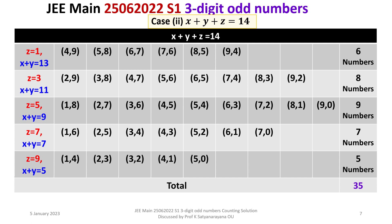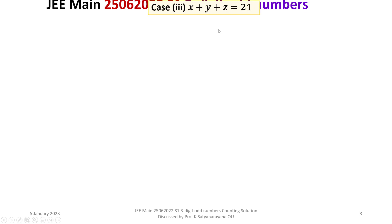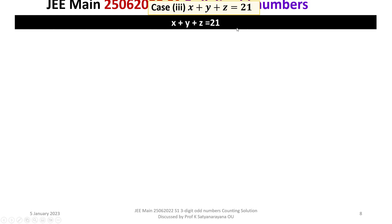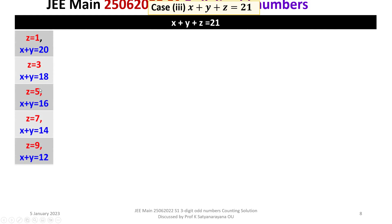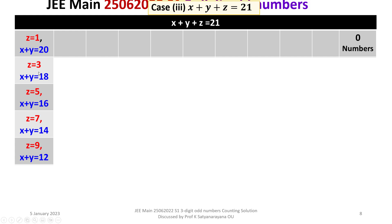Case 3: x plus y plus z equals 21. For z equal to 1, x plus y equals 20 — no valid ordered pairs exist. For z equal to 3, x plus y equals 18; starting from 9,9 that is only one pair — 1 number. For z equal to 5, x plus y equals 16, giving: 7,9; 8,8; 9,7 — that is 3 numbers.